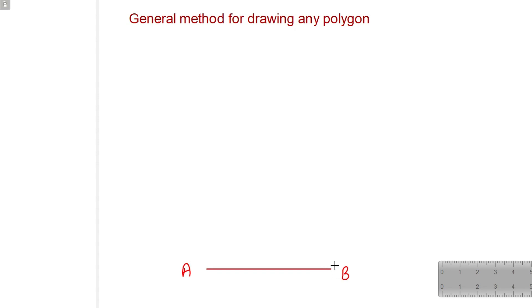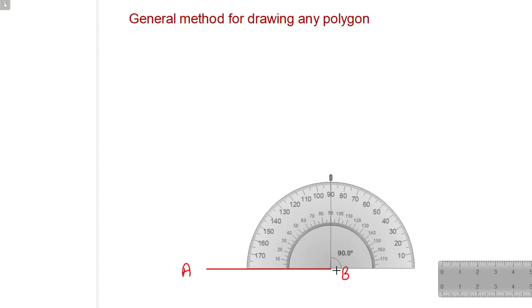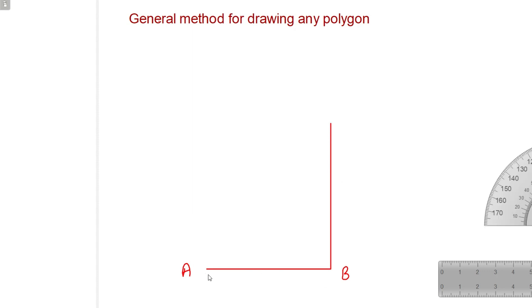Now from point B, we will draw one perpendicular line. So here we have drawn the perpendicular line to the given line AB.